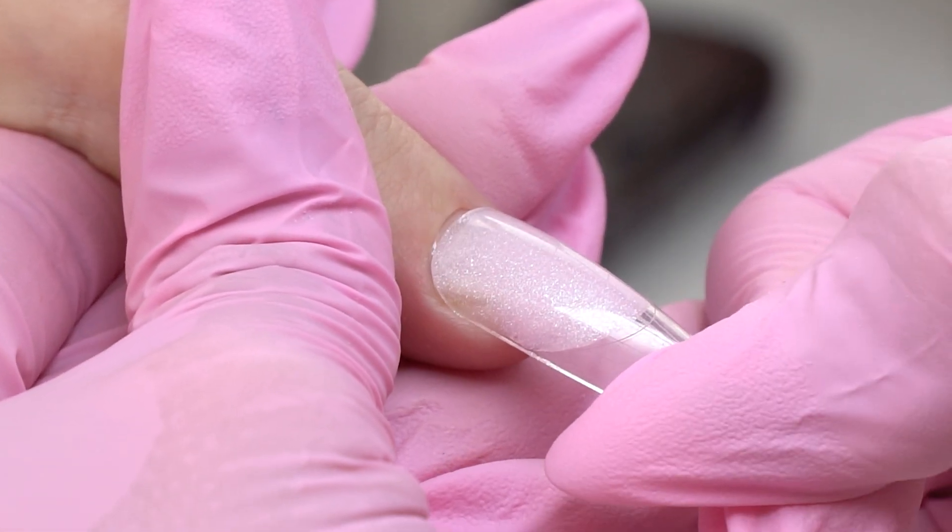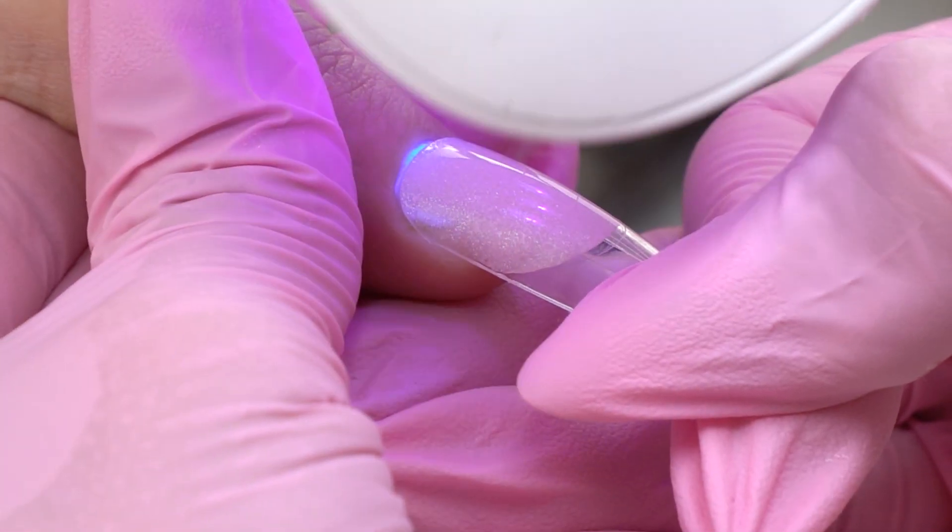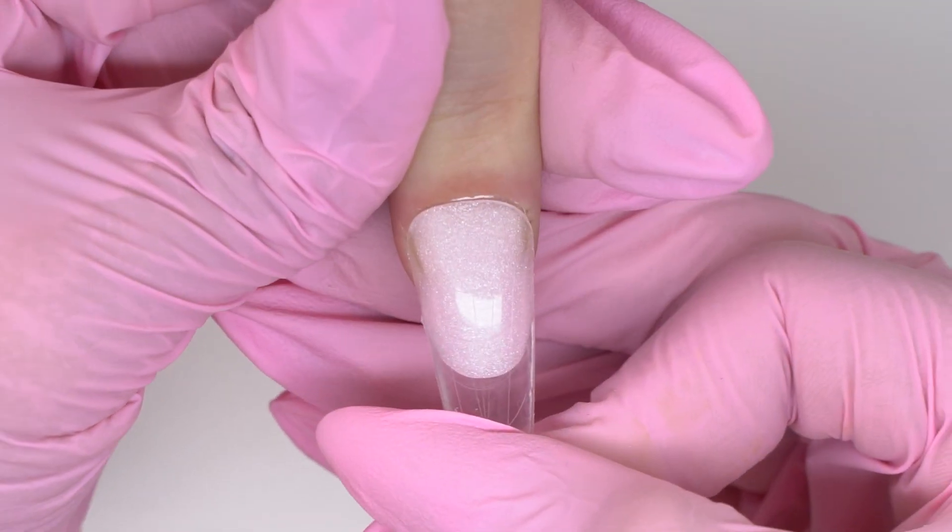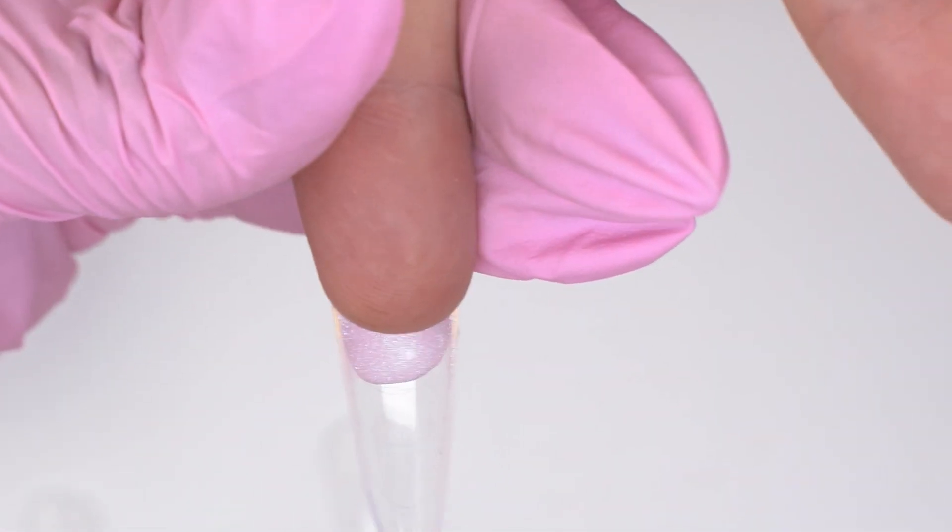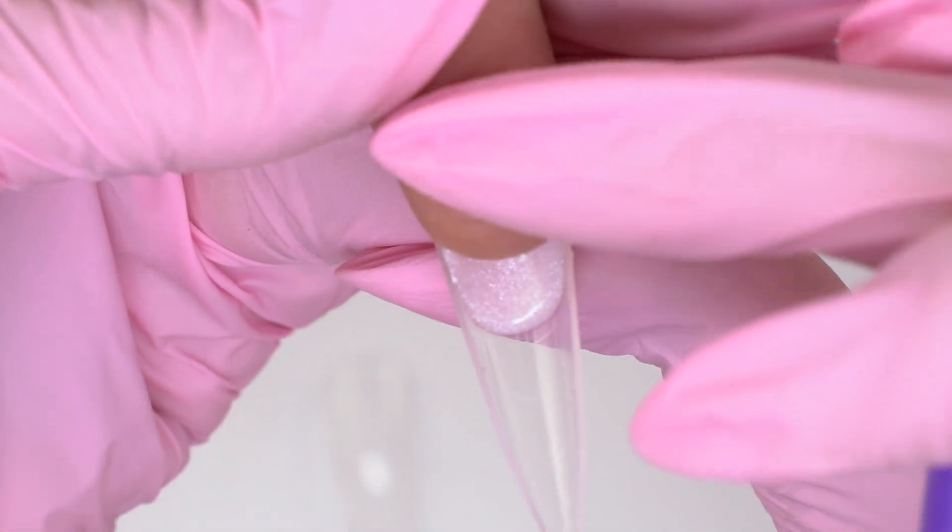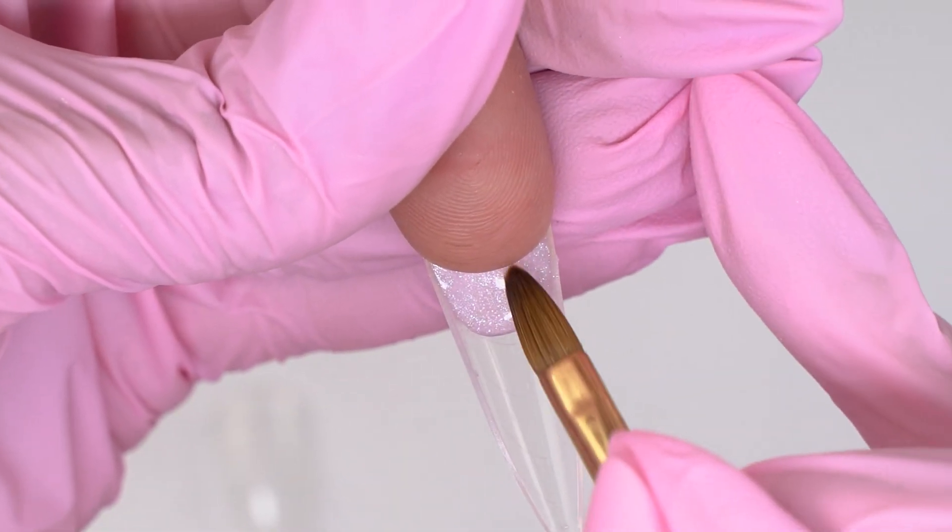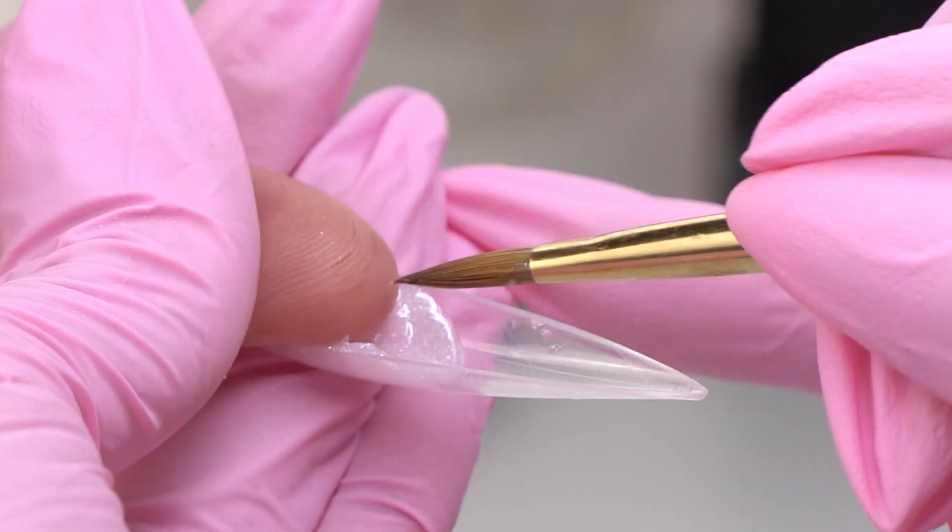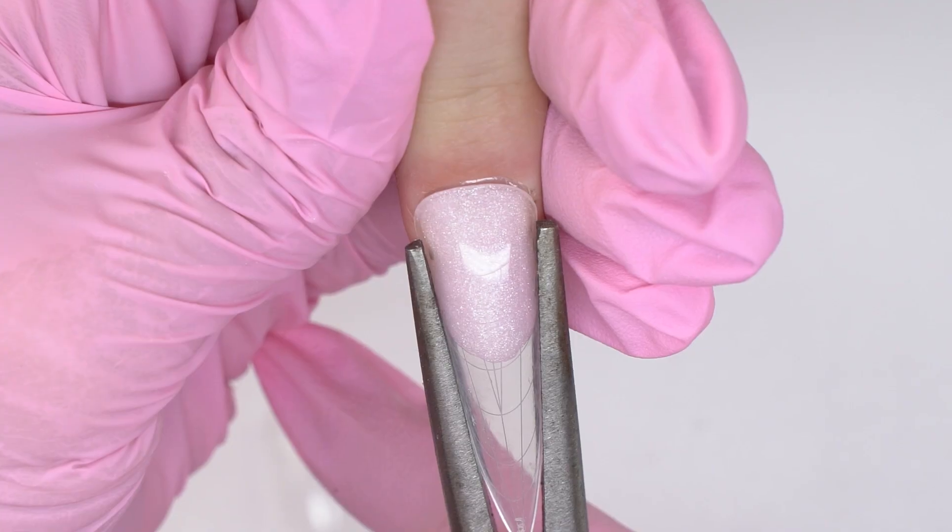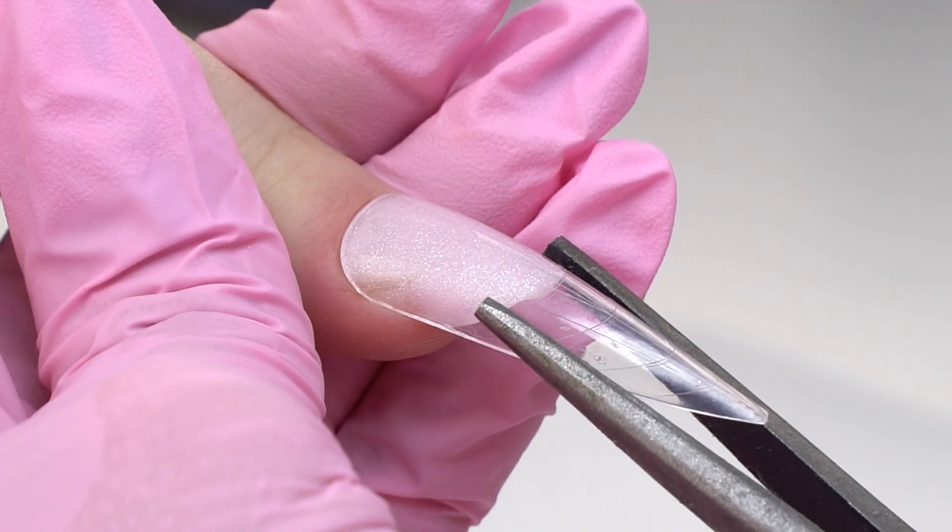I'm using some aqua gel liquid to spread the aqua gel. Now I set up the form and secure it in the cuticle zone with a portable lamp. Press it, turn the finger over, and align it on the inside. After curing, I slightly pinch the free edge.